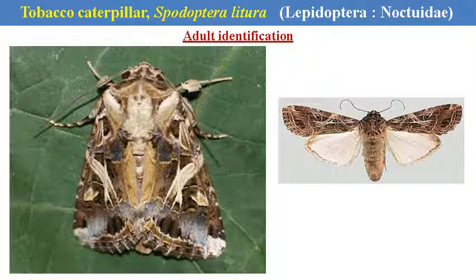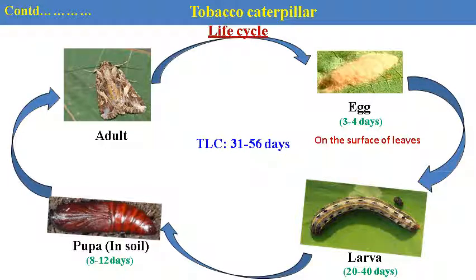Another important pest is the defoliator — a very important type of caterpillar — that is Spodoptera litura. It is from the Noctuidae family and has a polyphagous nature; it can be observed on all kinds of vegetables and even in other fruit crops. Its life cycle is completed within 31 to 56 days. Life cycle starts with the egg stage of 3 to 4 days, laid by the female on the surface of the leaves covered with scales. Larval stage is 30 to 40 days. Pupa forms in the soil for 8 to 20 days — this brown, shiny pupa is observed in the soil. Adults are free-living and have brownish-blackish wings with a very strong capacity to fly.